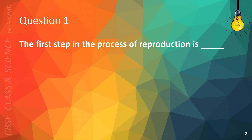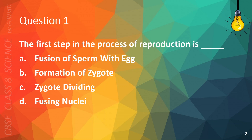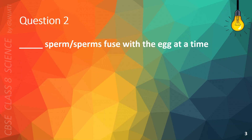Question 1. The first step in the process of reproduction is: A. Fusion of sperm with egg, B. Formation of zygote, C. Zygote dividing, D. Fusing nuclei. The correct answer is A. Fusion of sperm with egg.